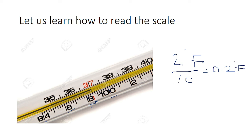Starting from 98, the next mark is 98.2, then 98.4, and the red arrow denotes 98.6 degrees Fahrenheit. This thermometer therefore measures 98.6 degrees Fahrenheit, which is the normal body temperature, so the person does not have a fever.